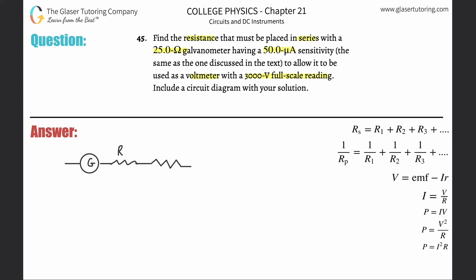So this could be the resistance of the galvanometer and then this is that unknown resistance. Basically what we realize, if we know the total current flowing through, they told us it's going to be 50 micro amps.